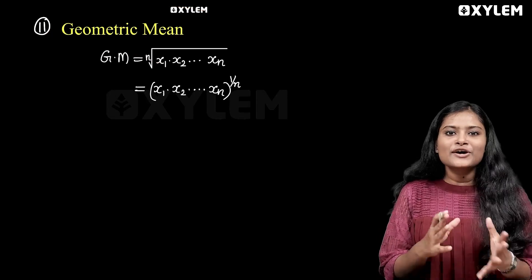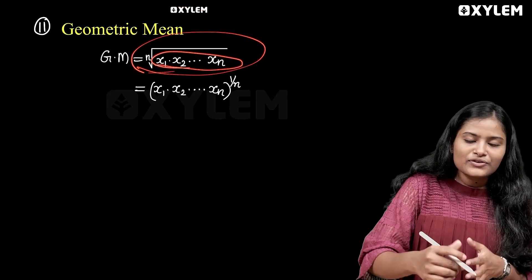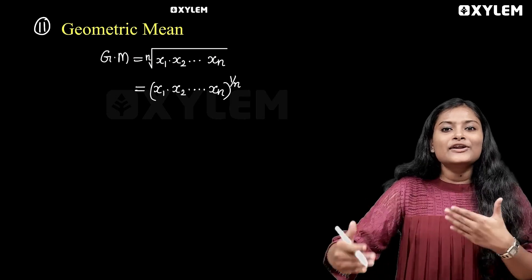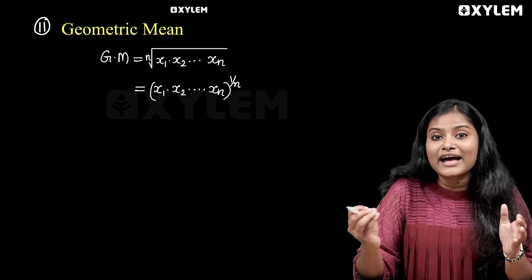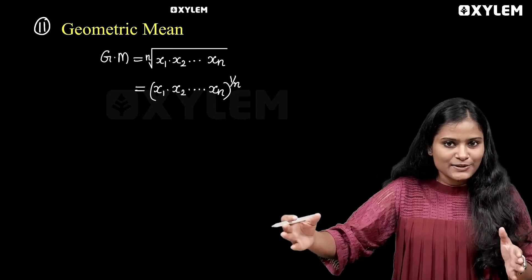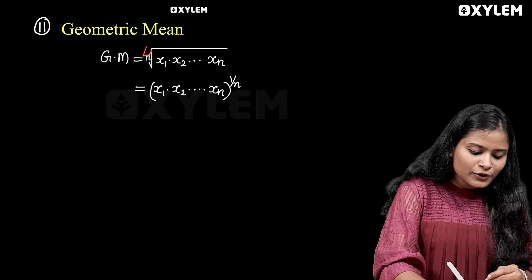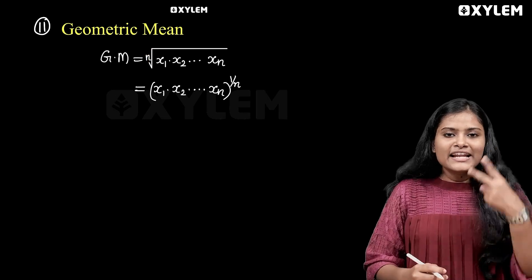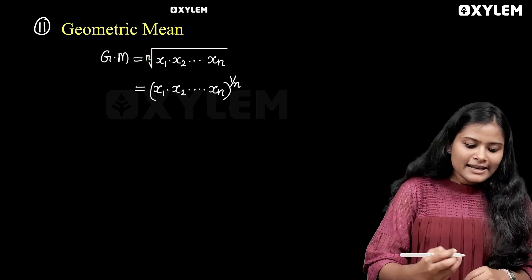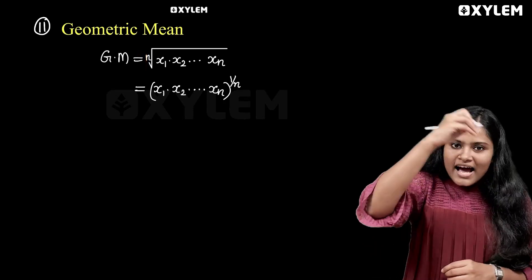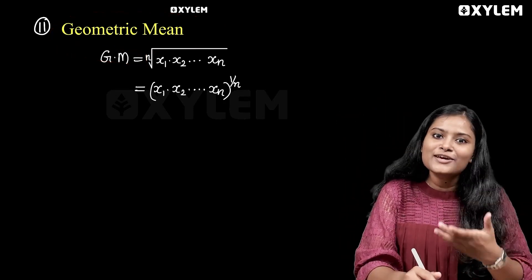This is the geometric mean. The geometric mean is the nth root of x1 into x2 into xn. What are the values of x1 into xn? We have different values and a different number. Now, 4th root is 4th root, 3rd root is cube root, and 7th root is 7th root. That is the geometric mean.